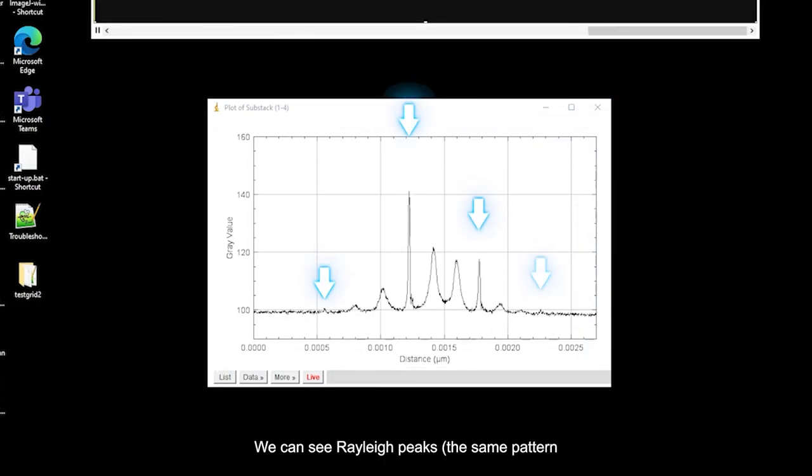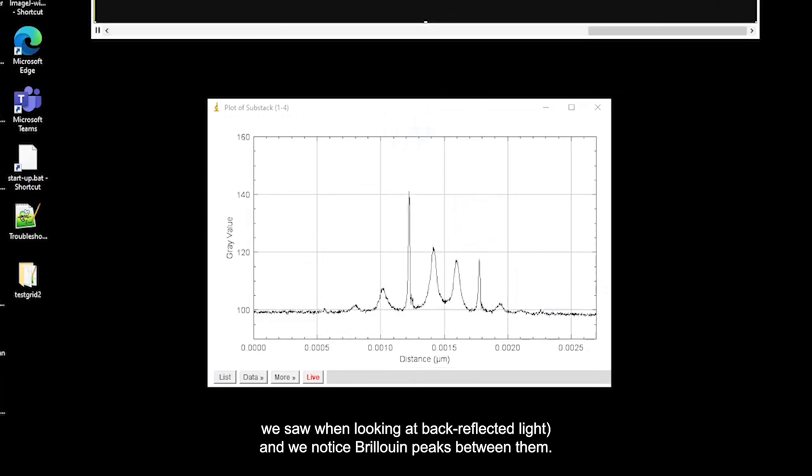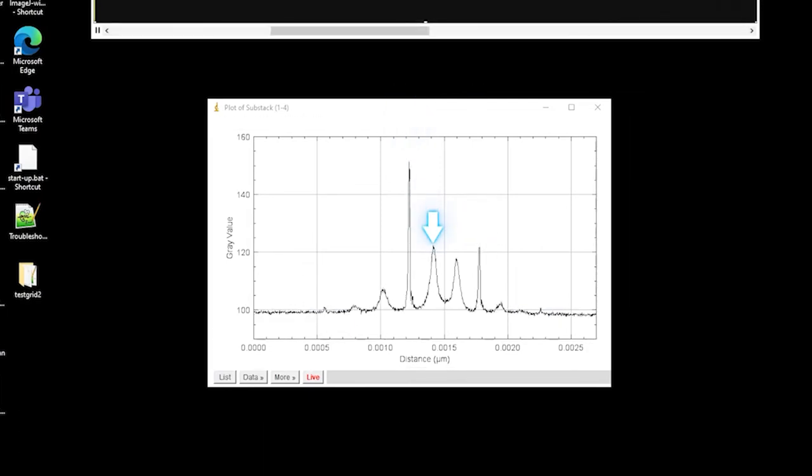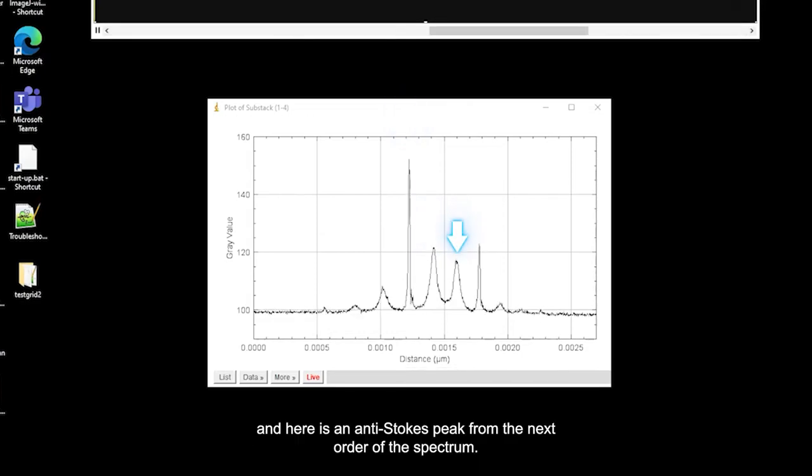We can see Rayleigh peaks, the same pattern we saw when looking at back-reflected light, and we notice Brillouin peaks between them. This peak is a Stokes peak, belonging to the same order of spectrum as this Rayleigh peak, and here is an anti-Stokes peak from the next order of the spectrum.